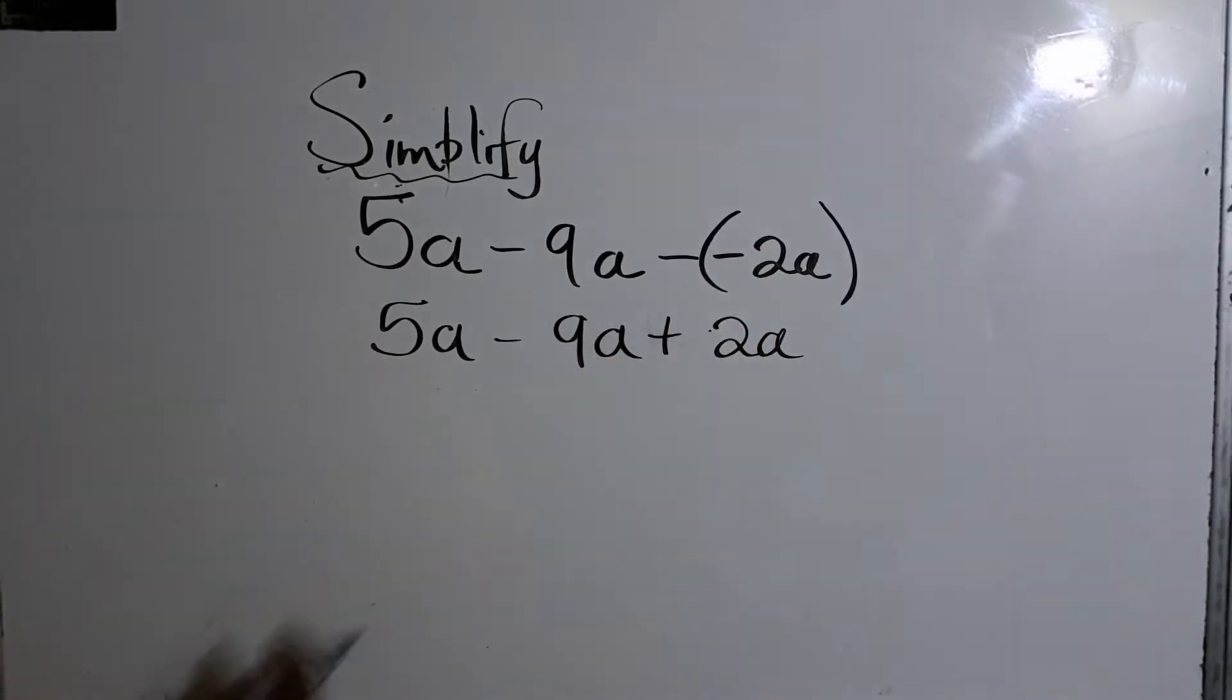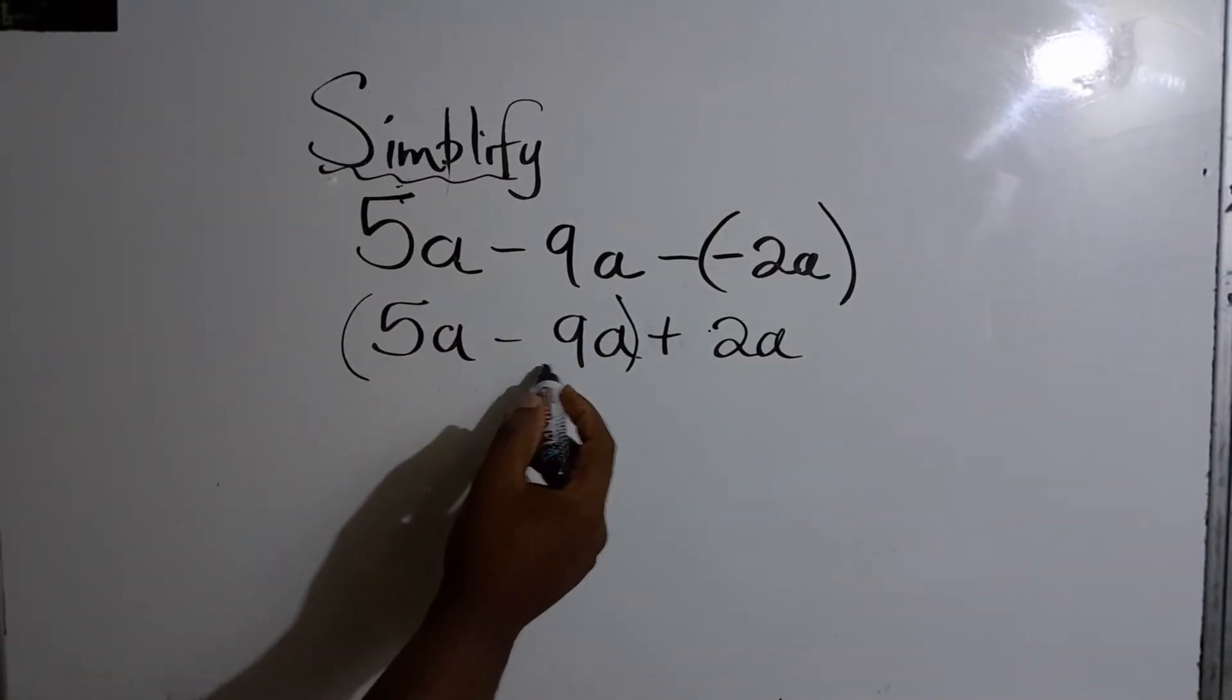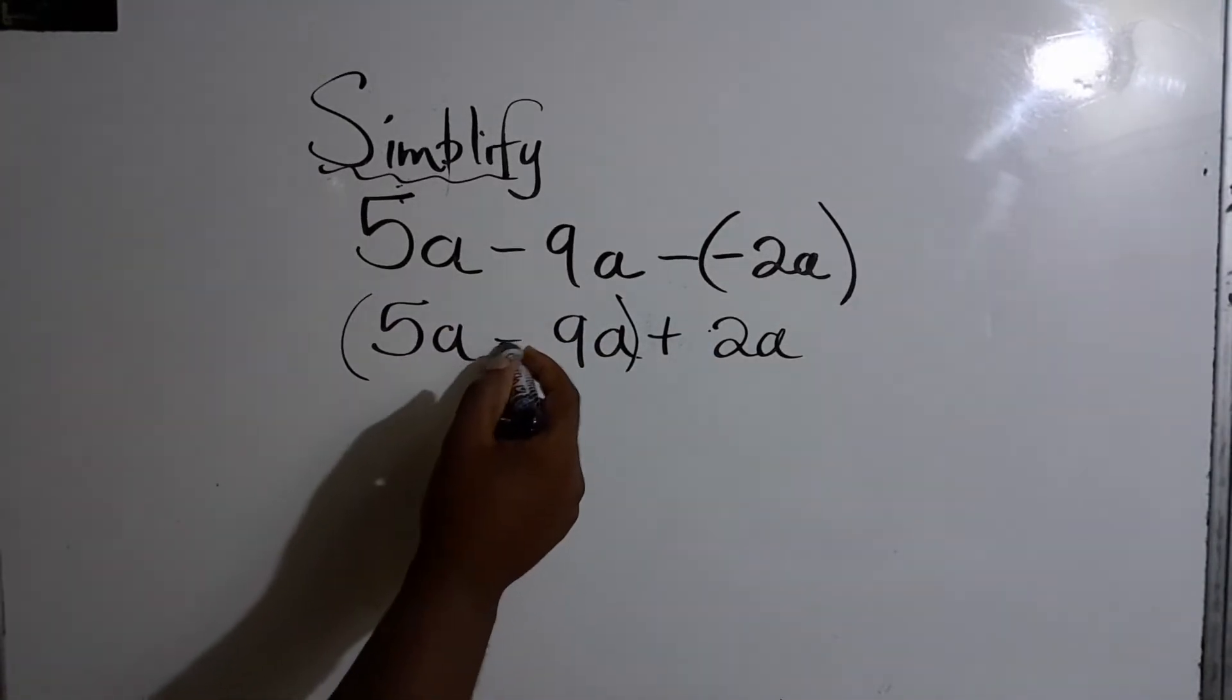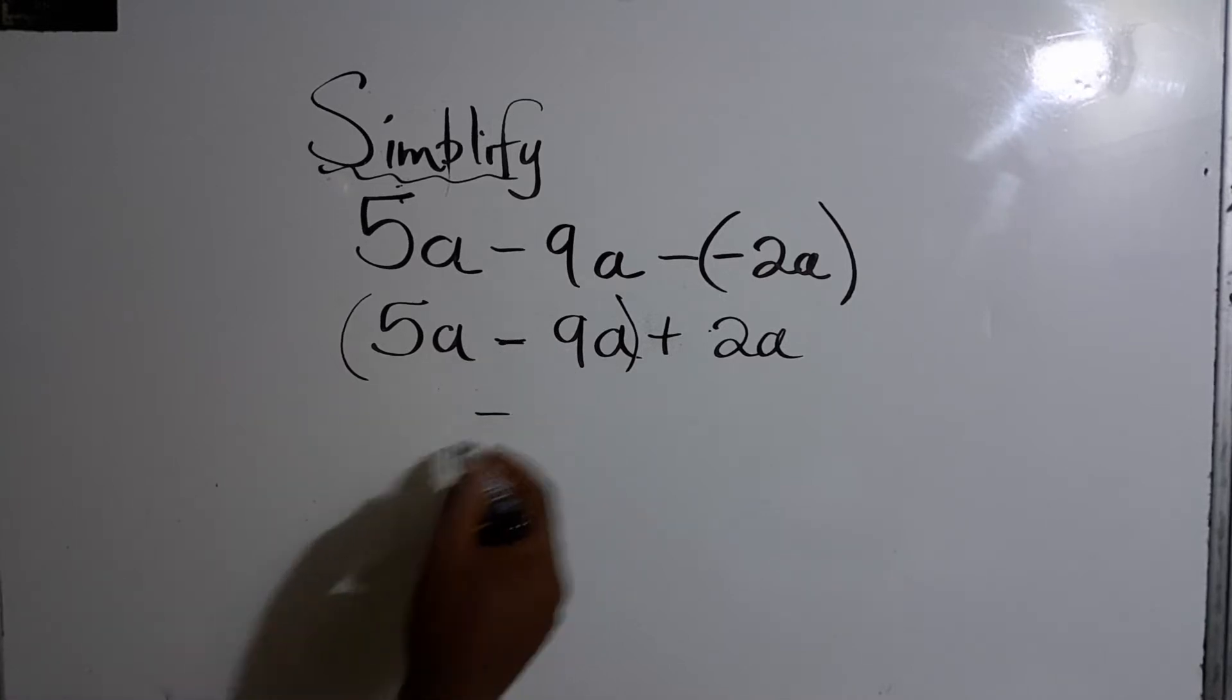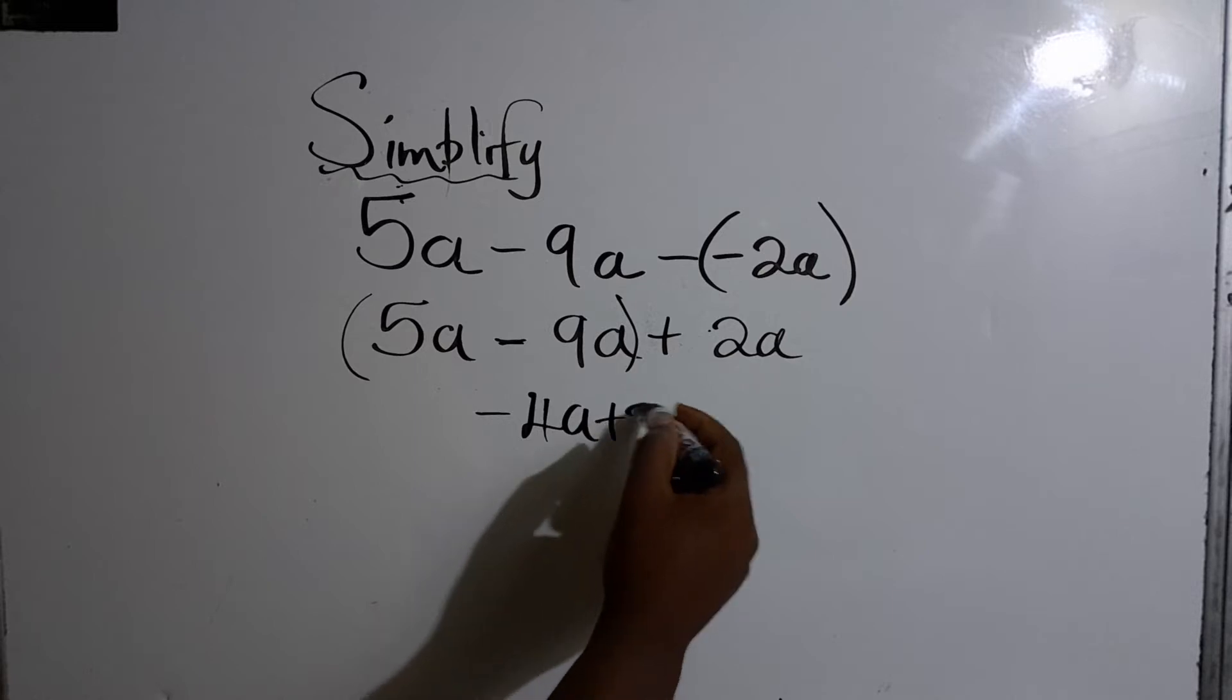So we can go ahead. So I'm going to work out this part. So 5A minus 9A, the 9 is bigger and it's negative. So our answer is going to be negative 4A plus 2A.